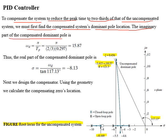The peak time of the uncompensated system is equal to pi divided by 10.57, which equals 0.297 seconds. The new peak time will be two-thirds times 0.297 seconds. The imaginary part of the new dominant pair of poles will be pi divided by the new peak time, which equals 15.87. Since both compensated and uncompensated systems have 20% overshoot, the new dominant pole lies on the line of constant damping ratio. Using trigonometry on the corresponding triangle, the real part is found to be minus 8.13.